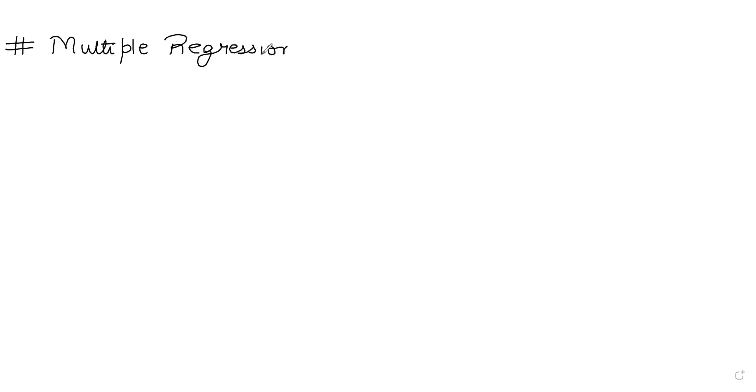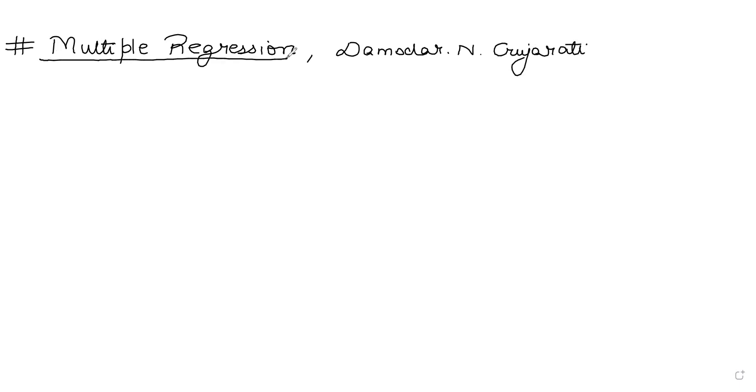I hope I'm audible to all students attending this lecture of introductory econometrics. We continue with our lectures on multiple regression. The book I prefer to follow for these lectures is Basic Econometrics by Damodar N. Gujarati. In the previous lecture of multiple regression, we had just introduced the topic.